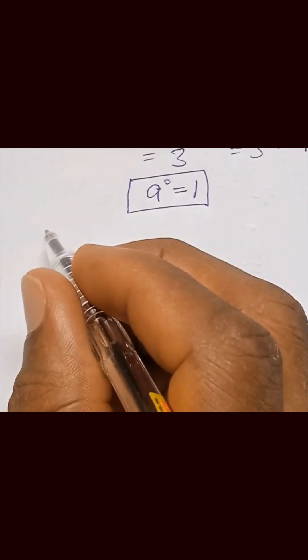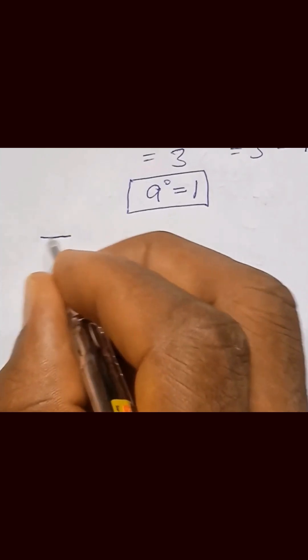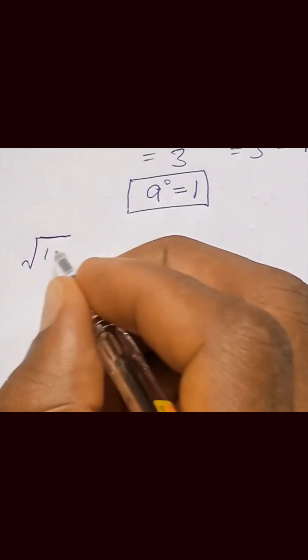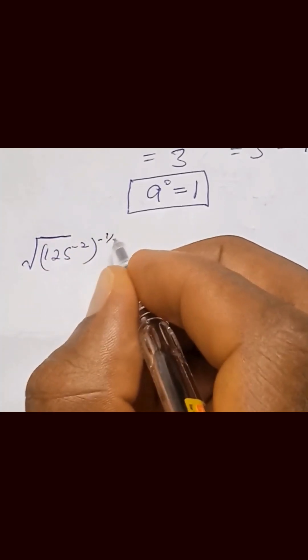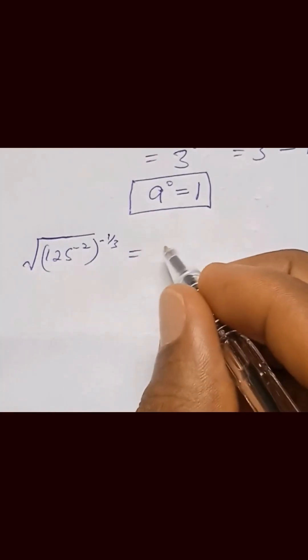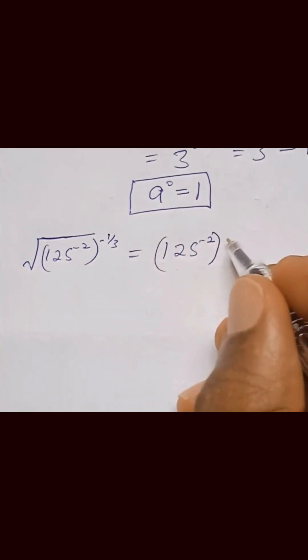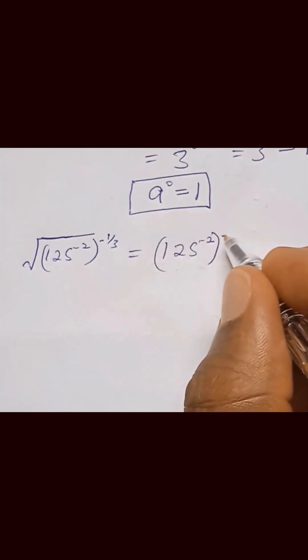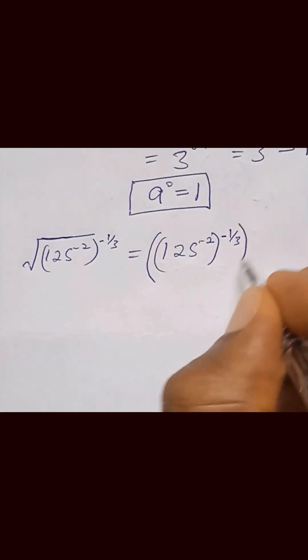For the second question, we have square root of 125 raised to the power 2, then raised to the power 1 over 3. This can be written as 125 raised to the power 2 in a bracket, raised to the power minus 1 over 3. Then this square root becomes raised to the power 1 over 2.